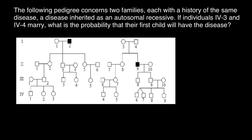Hello and welcome to Nikolai's Genetics Lessons. Today's problem is the following: a pedigree concerns two families, each with a history of the same disease — a disease inherited as an autosomal recessive. If individuals 4-3 and 4-4 marry, what is the probability that their first child will have the disease?